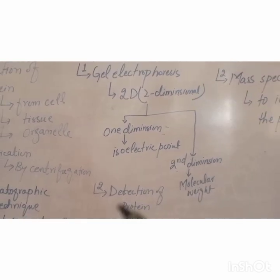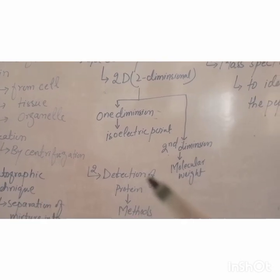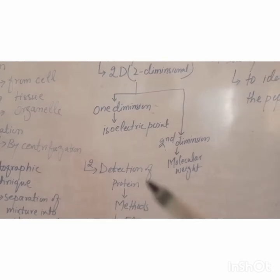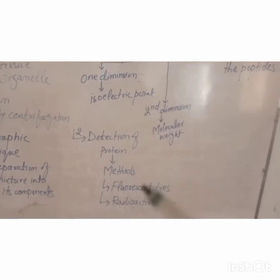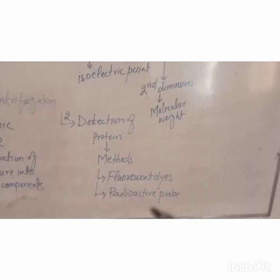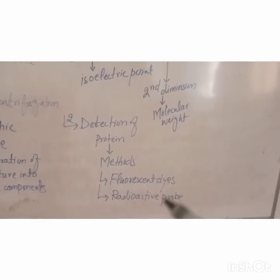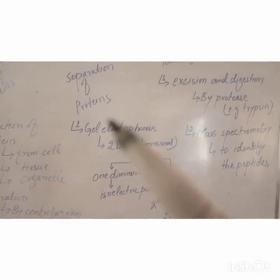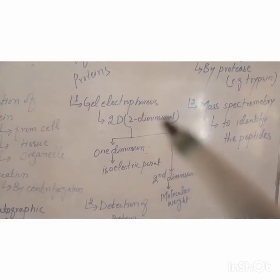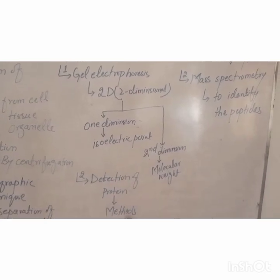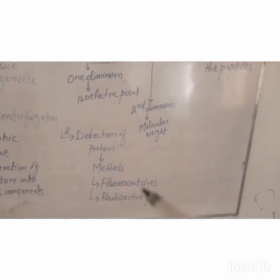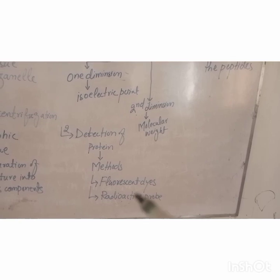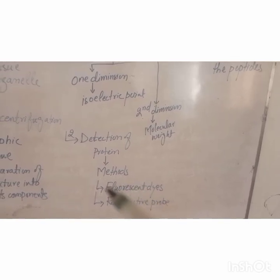Third is detection of protein. For the detection of protein, fluorescent dyes and radioactive probes are used. So protein is separated through gel electrophoresis, and then fluorescent dyes or radioactive probes are used to detect the proteins.